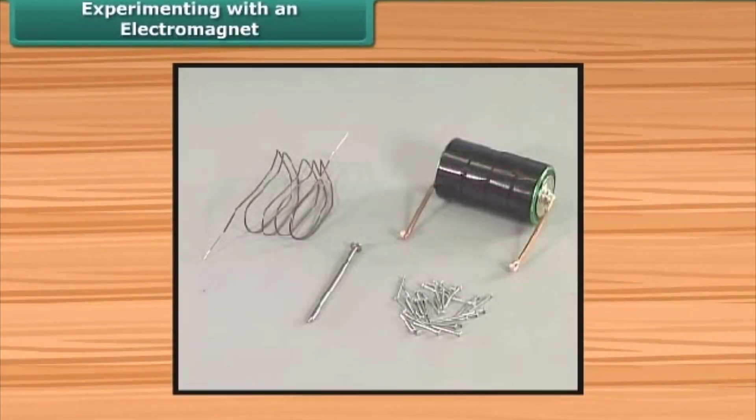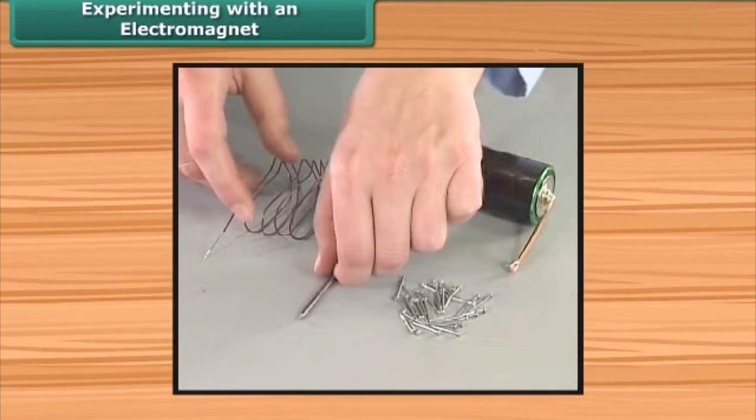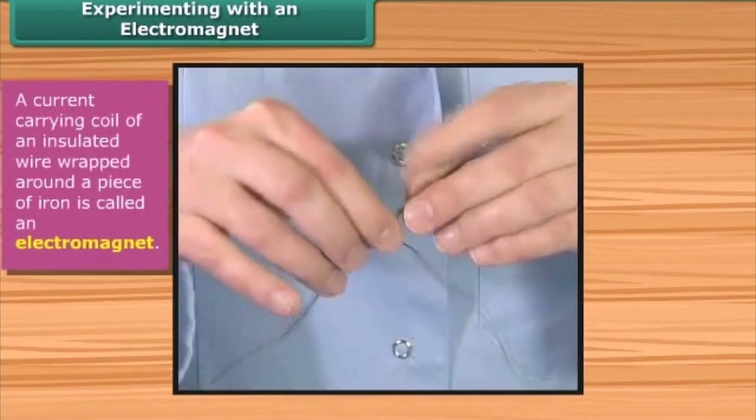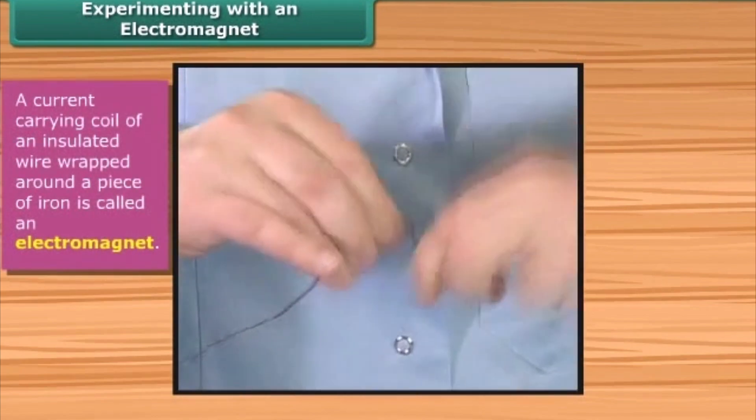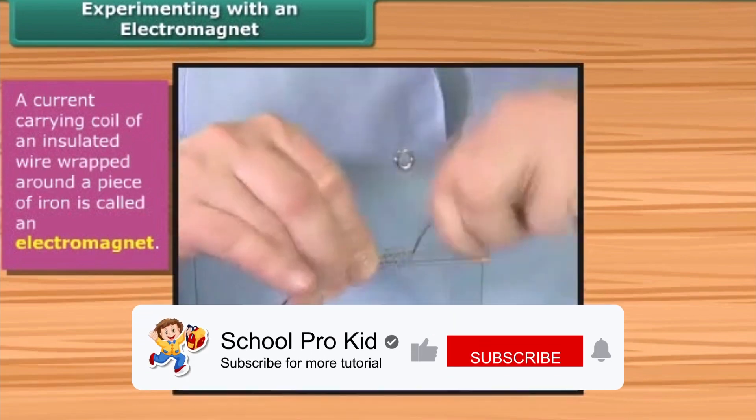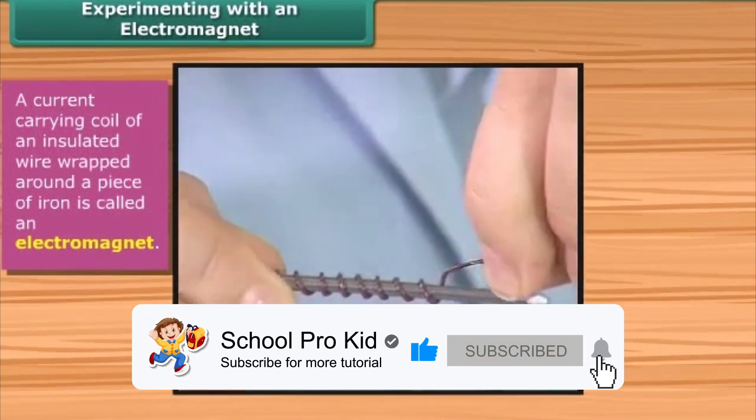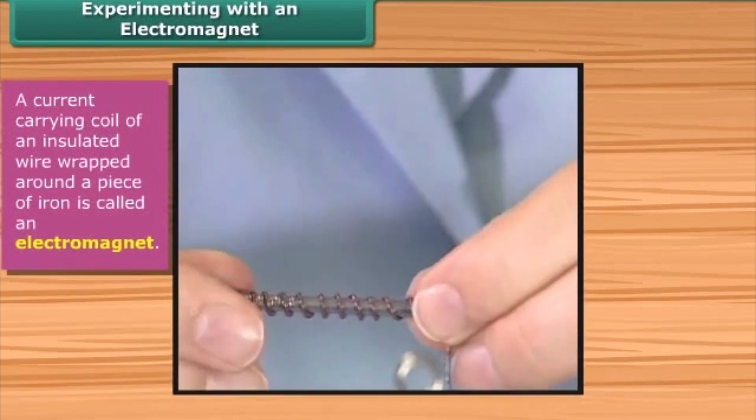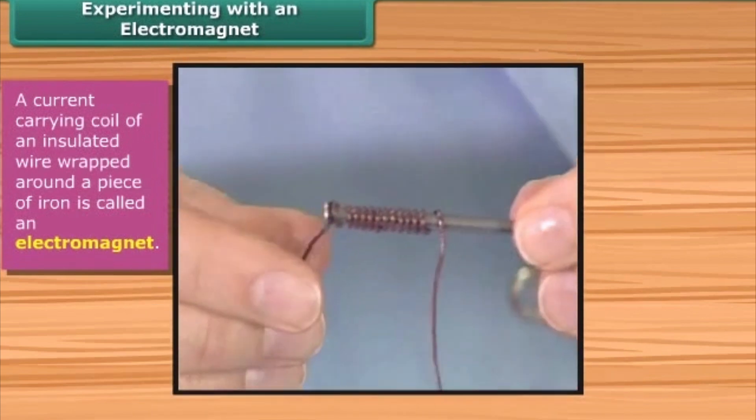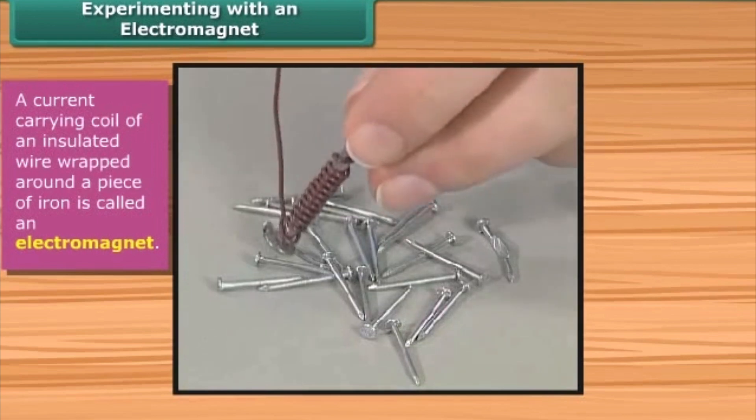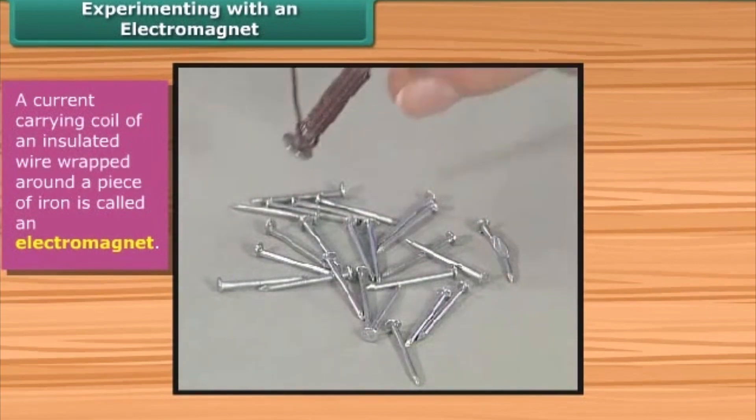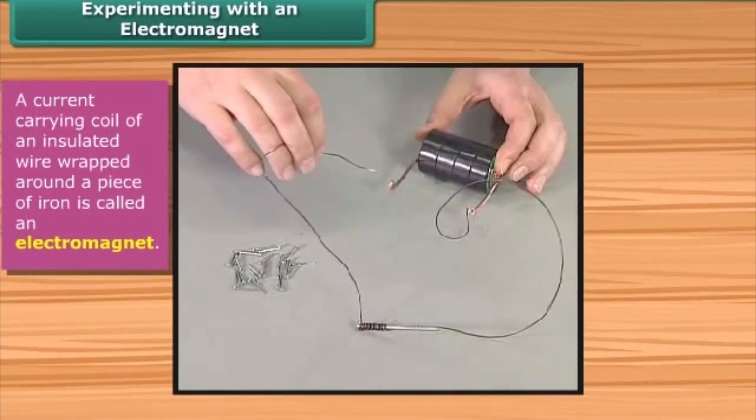Let's perform a simple activity to show the magnetic effect of current. Take a long piece of flexible wire and wrap it around an iron nail. This forms an electromagnet. Connect the free ends of the wire to the terminals of a cell through a switch. Now place some pins near the end of the nail and switch on the current.